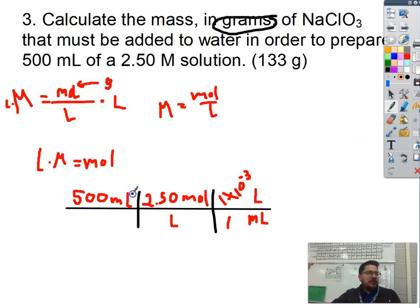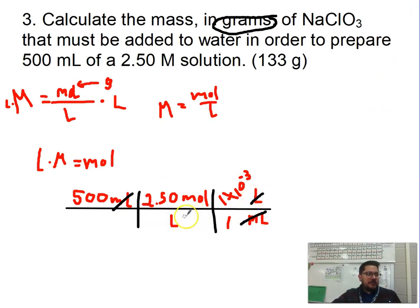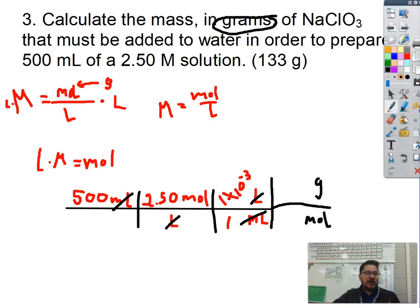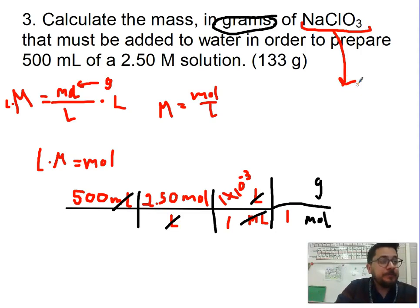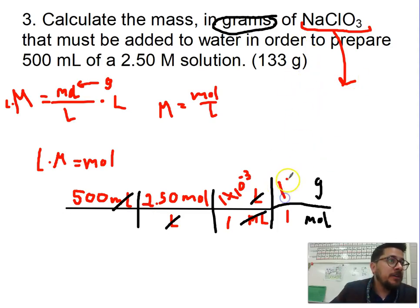Now I cancel things out. Milliliters cancel, liters cancel. I'm left with moles, but I want grams, so I'll go one more step. I put moles on the bottom so it cancels, and grams on top. One mole equals the molar mass of this formula, which I'll add up on the periodic table: 106.44 g/mol. I plug in 106.44, and now I multiply all of these numbers.